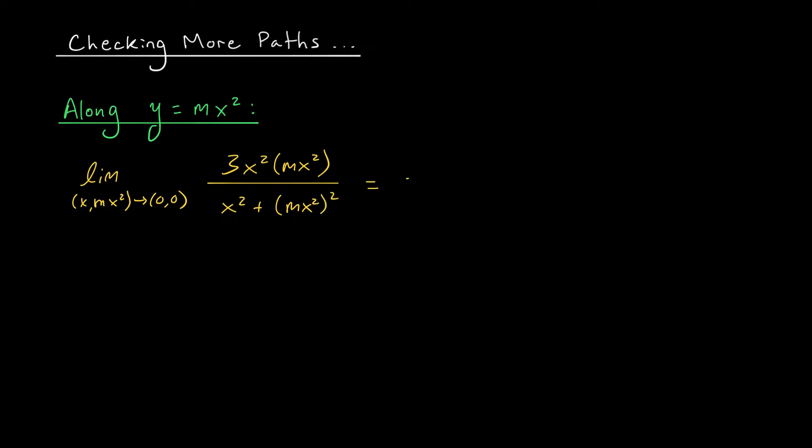If we expand and simplify, we get the limit as (x,mx²) goes to (0,0) of 3mx⁴ divided by x² plus m²x⁴. Just like before, we're going to try to cancel some of these x's, but it looks like the largest power of x I can factor in the denominator is x². So that's all I can cancel. I get the limit as (x,mx²) goes to (0,0) of 3mx² divided by 1 plus m²x².